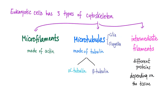There are three types of cytoskeleton in your cell: microfilaments, microtubules, and intermediate filaments. Microfilaments are made of actin. Microtubules are made of tubulin — they will form the cilia and flagella. There are two types of tubulin: alpha and beta. Intermediate filaments are made of different proteins depending on the specific tissue.